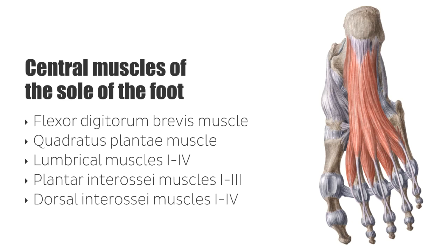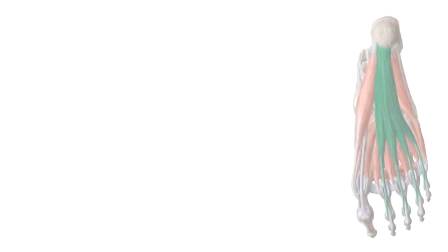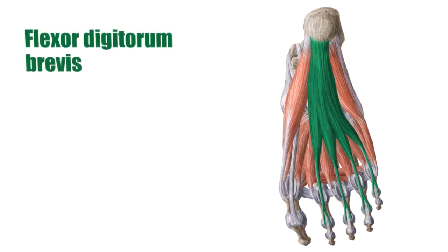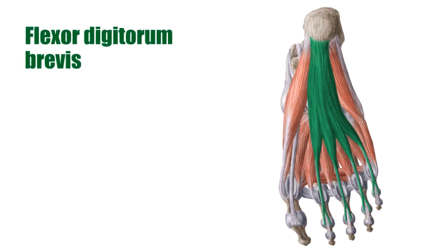Let's start off by talking about the first one on our list that I'm now highlighting here in green — the flexor digitorum brevis. This muscle lies relatively superficial under the plantar aponeurosis and is the largest muscle in the central compartment.